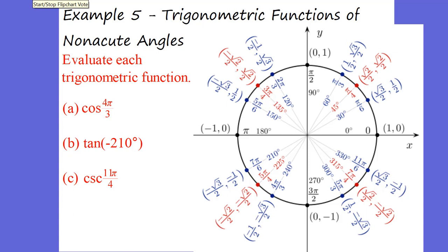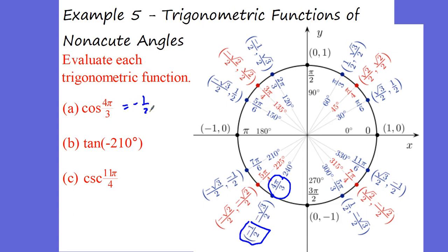We're going to evaluate each trig function using the unit circle — that's going to be big time for this. We have cosine of 4π over 3. Go to 4π over 3 on the unit circle. Cosine is going to be the first value there, which equals negative 1 half. You can verify that on your calculator — make sure you're in radians mode.